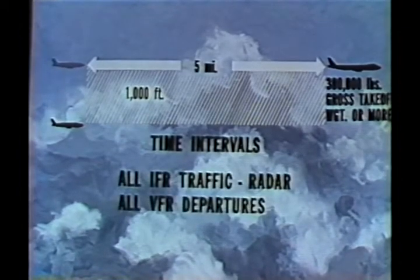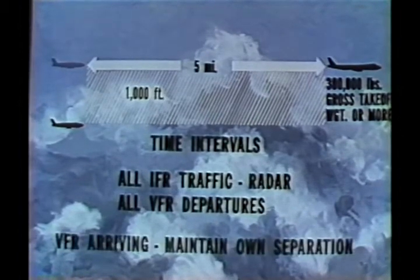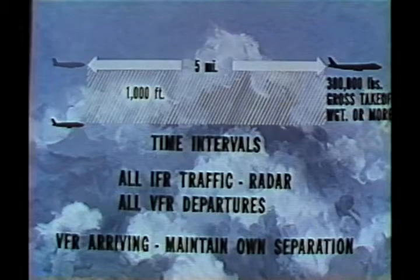Research indicated that a five-mile minimum separation should be maintained when within 1,000 feet below and behind any aircraft capable of a gross takeoff weight of 300,000 pounds or more. Separation varies depending on the size of the generating versus the encountering aircraft. This was translated into time intervals for landing and takeoff situations. These separation standards, put into effect in mid-1970, are applicable to all IFR traffic being radar vectored and to VFR departures. Pilots of VFR arriving aircraft are expected to maintain their own separations.